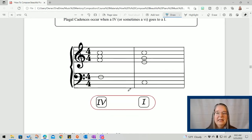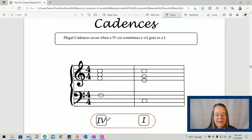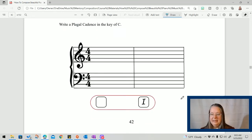Plagal cadences. This is when a four and sometimes a six, but most of the time a four resolves to a one chord. This is also called the amen cadence or the church cadence or the religious cadence. Because if you think of that old choral music in a big cathedral, when they're singing amen at the end of most of those pieces, they are a four chord to a one chord. Here's what it sounds like. Do you hear that amen in there? So that's what that is known for.